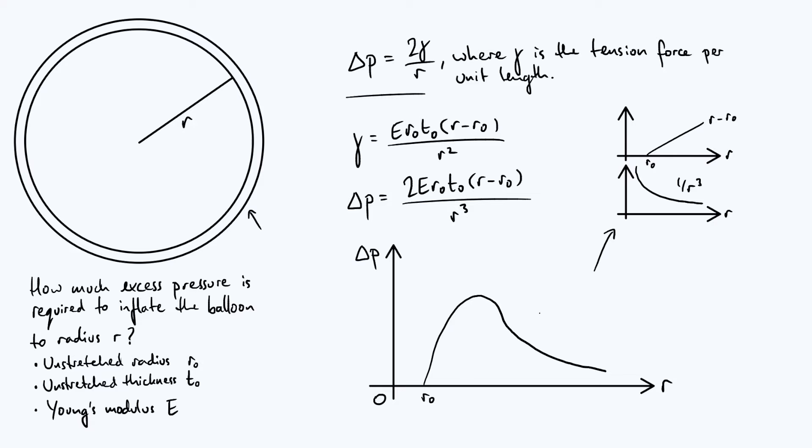If you put that all together, you conclude that the shape of the graph looks something like the one that's just appeared at the bottom there, and it has the feature that we described at the very beginning where the required pressure gets bigger and bigger as you inflate it from its unstretched radius, but only up until this point here, at which point the required pressure to inflate it further actually drops, and it becomes easier to inflate from that point onwards.